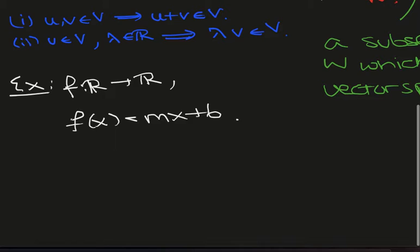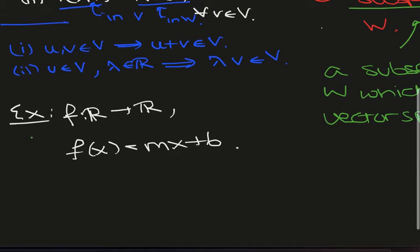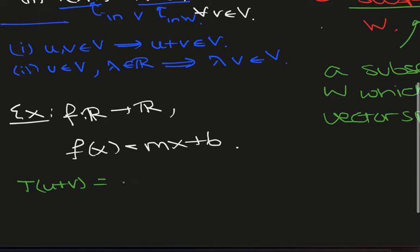Let's have a look at what we can do. We need to check two conditions. We need to check that T(u+v) = T(u) + T(v). So let's look at what T(u+v) is. Well, that's in this case F(u+v), which is m(u+v) + b.